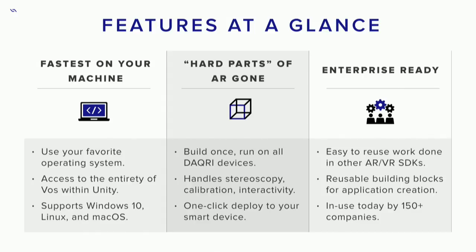At a glance, you're fastest on your machine, so we wanted to make sure all of our tools work on whatever platform you work on. We support Linux, Mac, and Windows. All of our sensors — positional tracking, thermal camera, depth cameras — can all be accessed through our Unity extension, and we do a lot of the hard parts for you. Because we're working all the way from silicon to the software and application layer, we handle things like stereoscopy, calibration, and interaction patterns. We have a one-click deploy — when I click build in Unity, it appears on my helmet or my glasses. And we've architected it so it's really easy to bring content you've already built into the Daiquiri ecosystem. If you've used a variety of AR SDKs, there are very similar paradigms. Porting content is not that hard. It's in use today by about 150 plus companies.